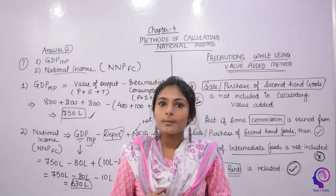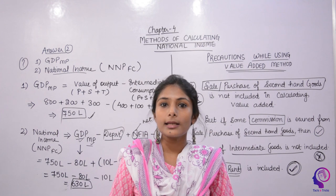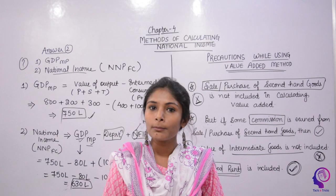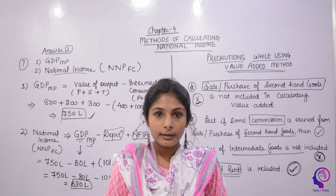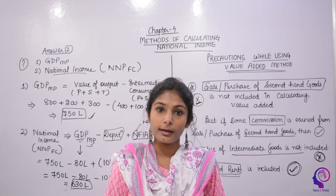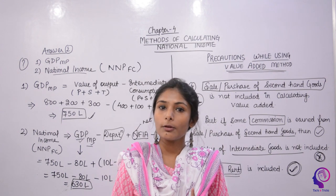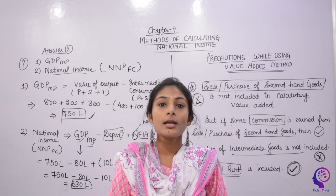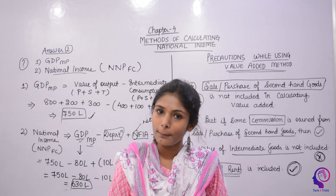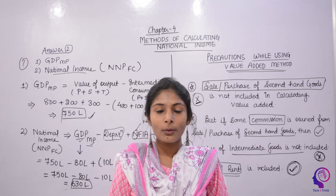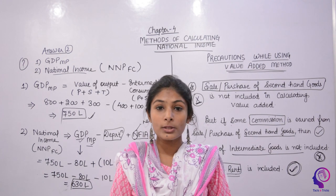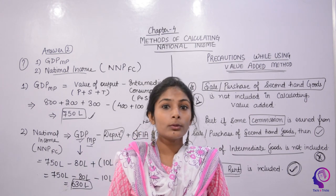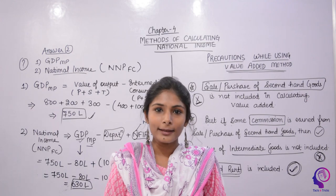So that was all for today. We covered the three methods of calculating national income: the Value Added Method, the Income Method, and the Expenditure Method. Today we focused on the Value Added Method — its formula, two illustrations, and precautions. I hope you understood today's video. If you have any doubts, ask in the comment section. Please like, share, and subscribe to Tax and Tricks for more economics videos. Thank you.